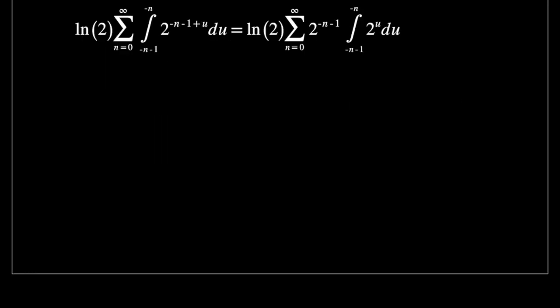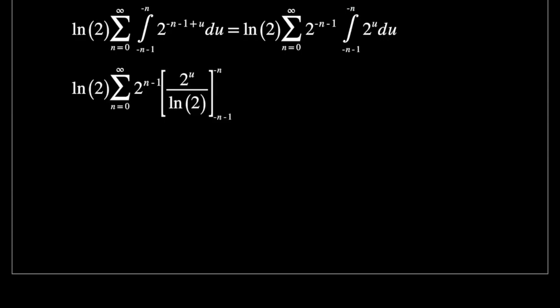Now our integral is really quite simple. So we just have log of 2 times our sum from n equals 0 up to infinity of 2 to the power of minus n minus 1 times 2 to the power of u divided by log of 2 evaluated from minus n minus 1 to minus n. The first thing I'm going to do is cancel this log of 2 and this log of 2 and we're just going to get our sum and our simple evaluation of 2 to the power of u. And this is going to give us 2 to the power of minus n minus 2 to the power of minus n minus 1.